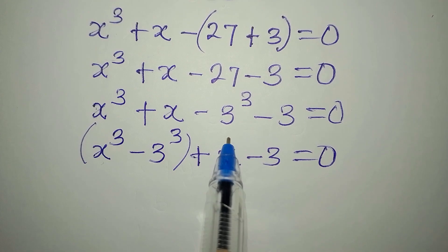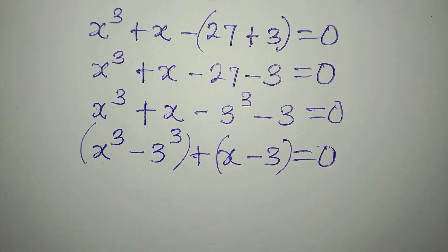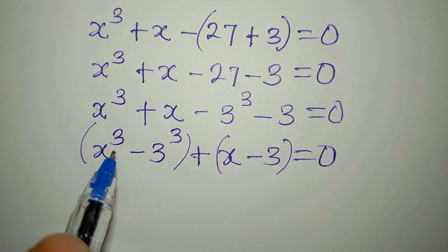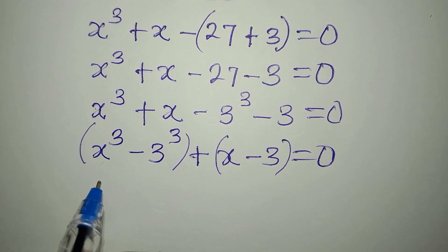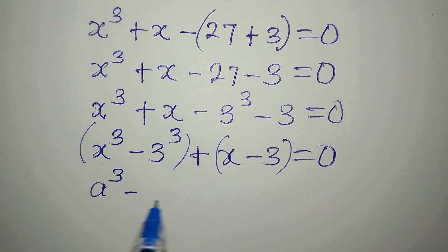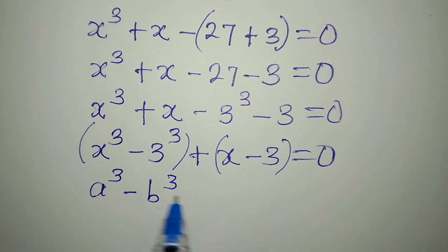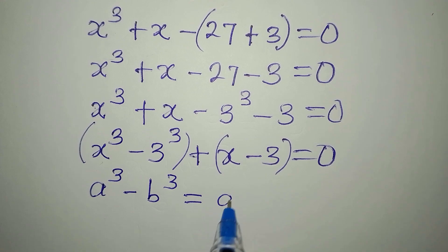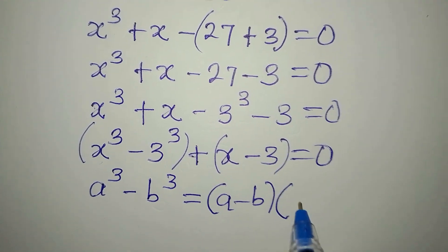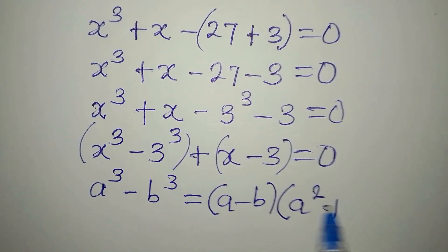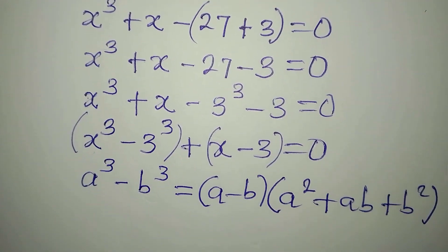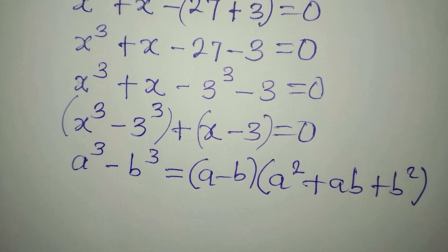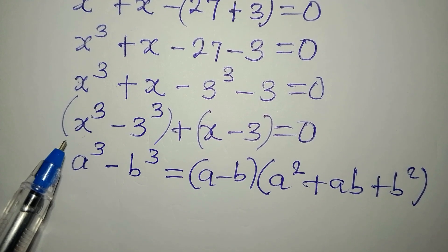The next step is to factorize these two terms. We call this the difference of two cubes, and it's a standard formula: if you have a to the power of 3 minus b to the power of 3, this is the same as a minus b, multiplied by a squared plus ab plus b squared.